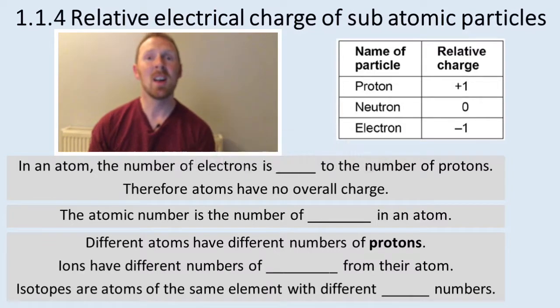Now that's important because isotopes that you'll come across, they've got different numbers of neutrons. And ions can gain or lose electrons to form. So the atomic number is the number of protons. That doesn't change unless you change the element. So different atoms have different number of protons.